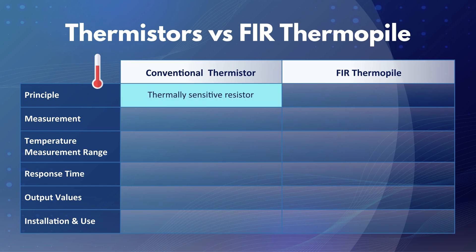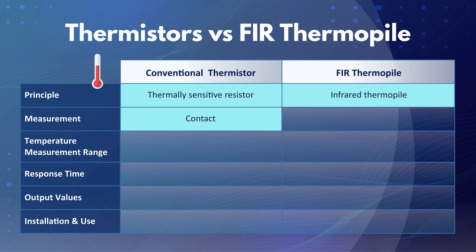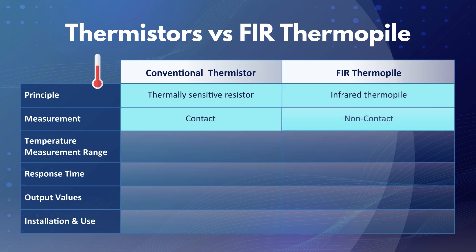Conventional thermistors use thermally sensitive resistors that change their electrical resistance with temperature variations. This change in resistance is utilized for temperature measurement through direct contact with the object. In contrast, FIR thermopiles detect and quantify the infrared radiation emitted by an object, and the detected radiation's strength correlates with the object's temperature, enabling accurate non-contact temperature measurements.